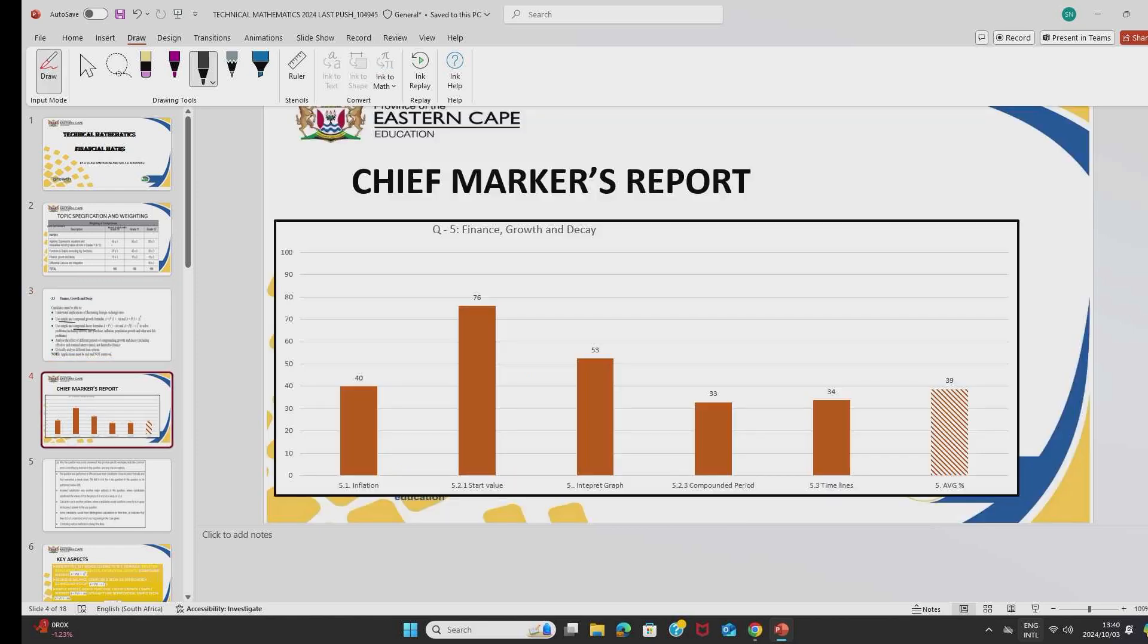However, according to the Chief Marker's reports, it has been reported that financial mathematics is not doing so well. Hence, it was performed at around 39% in the examination of 2023 and we want to change that. As you can see in this bar graph, here is an analysis.